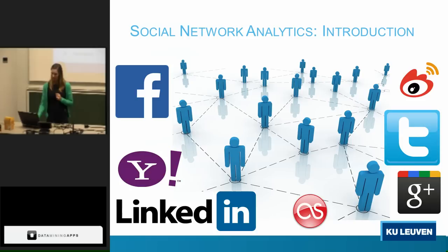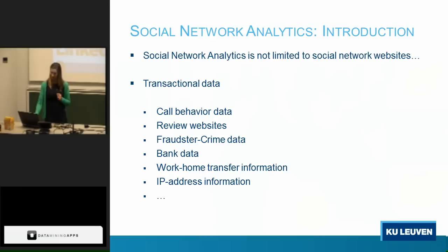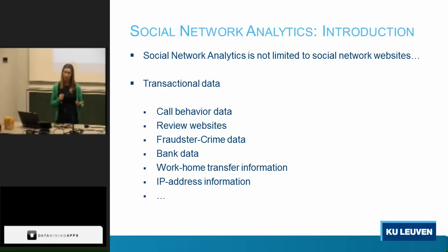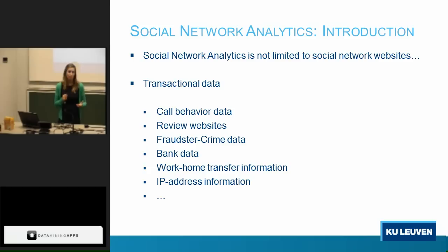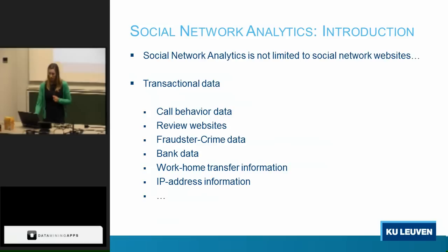What is social network analysis? Many people think it's just like Facebook, Twitter, or LinkedIn, but it goes far beyond that. All kinds of transactional data where two objects are related to each other, implicitly or explicitly, can create a network. For example, explicit links include people calling each other, fraudsters related to a crime, or people wiring money to each other. Implicit links include people who review the same products or websites, visit the same websites, or take the same path between work and home — the same bus or the same train.